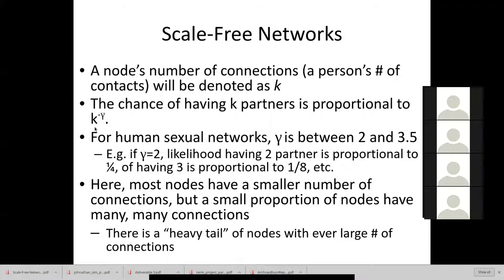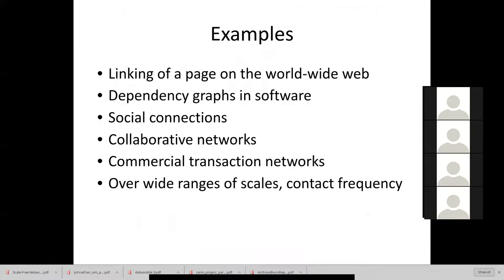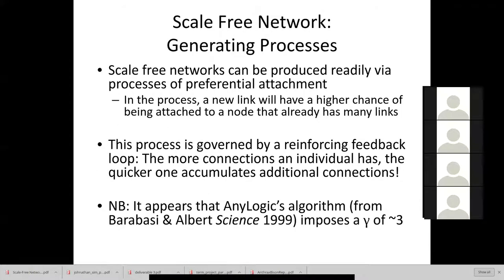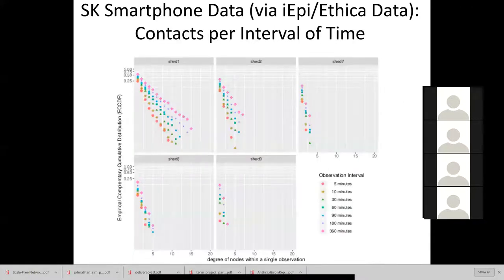This generates a distribution in the number of connections that varies as K to the minus gamma — a power law relationship between number of partners and their frequency in the population. These phenomena are legion and ubiquitous across many spheres. One reason is a generating process like preferential attachment; another is the dimensional structure of a problem. This is some data from successive smartphone studies here in Saskatchewan, from the Saskatchewan Health Ecology Data sets (SHED studies), looking at contact patterns and mixing patterns.